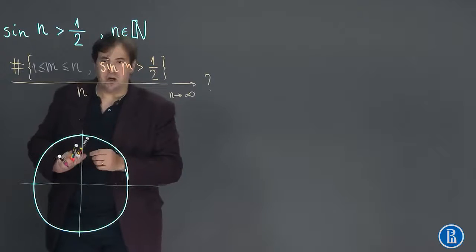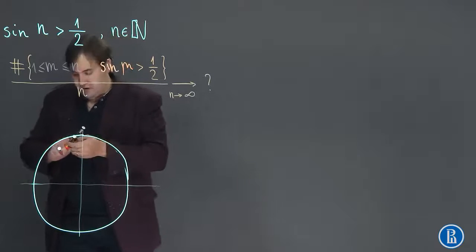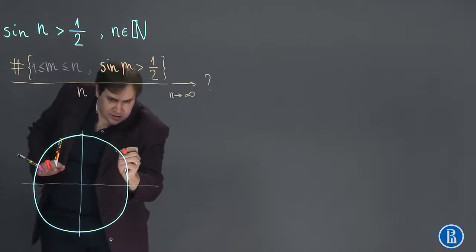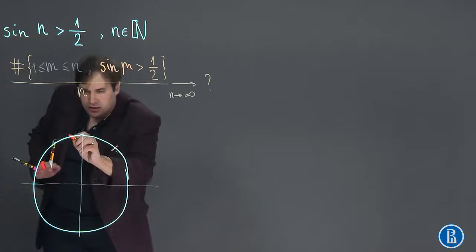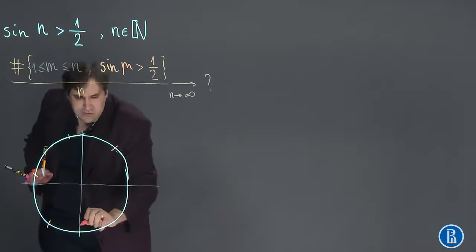Okay, so this is a trigonometric circle. And n as a natural number gives us marks on this circle. So let's say one is somewhere over here: one, two, three, four, and so on.